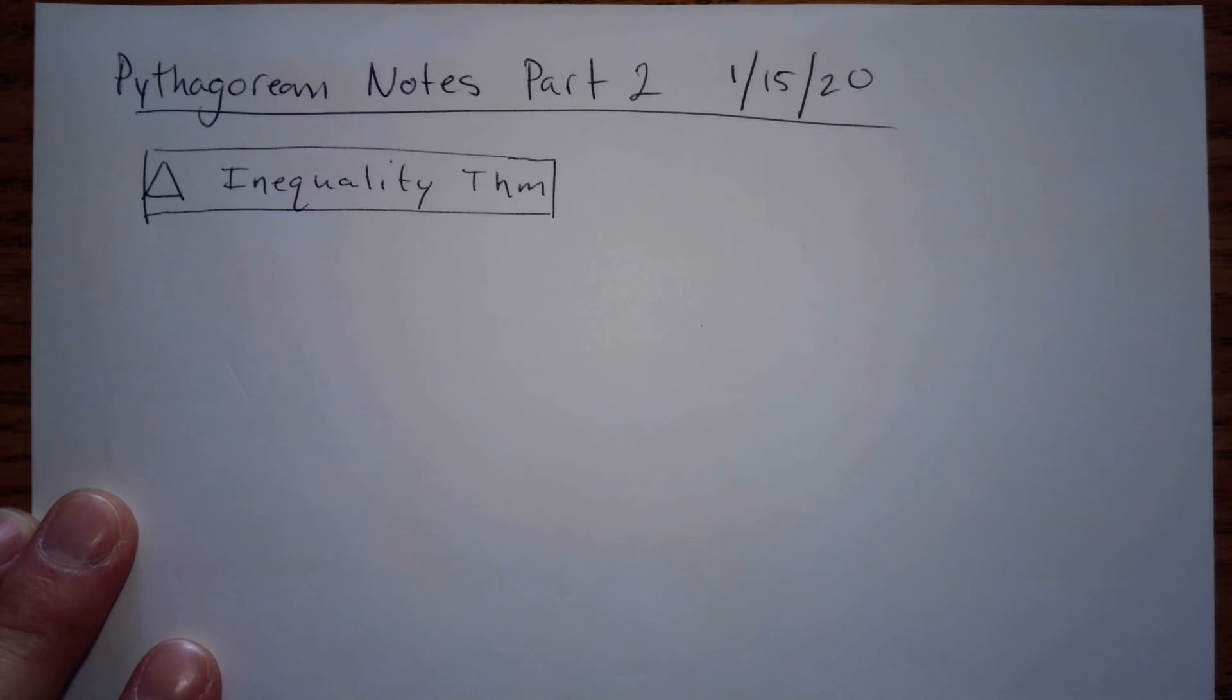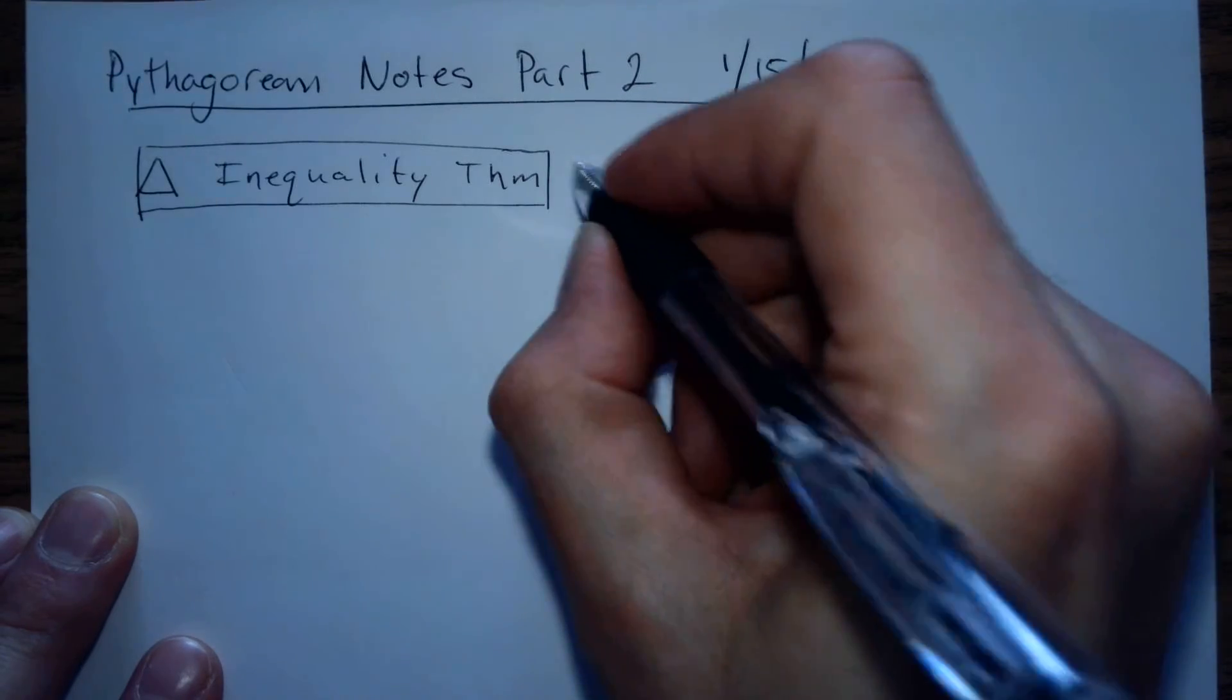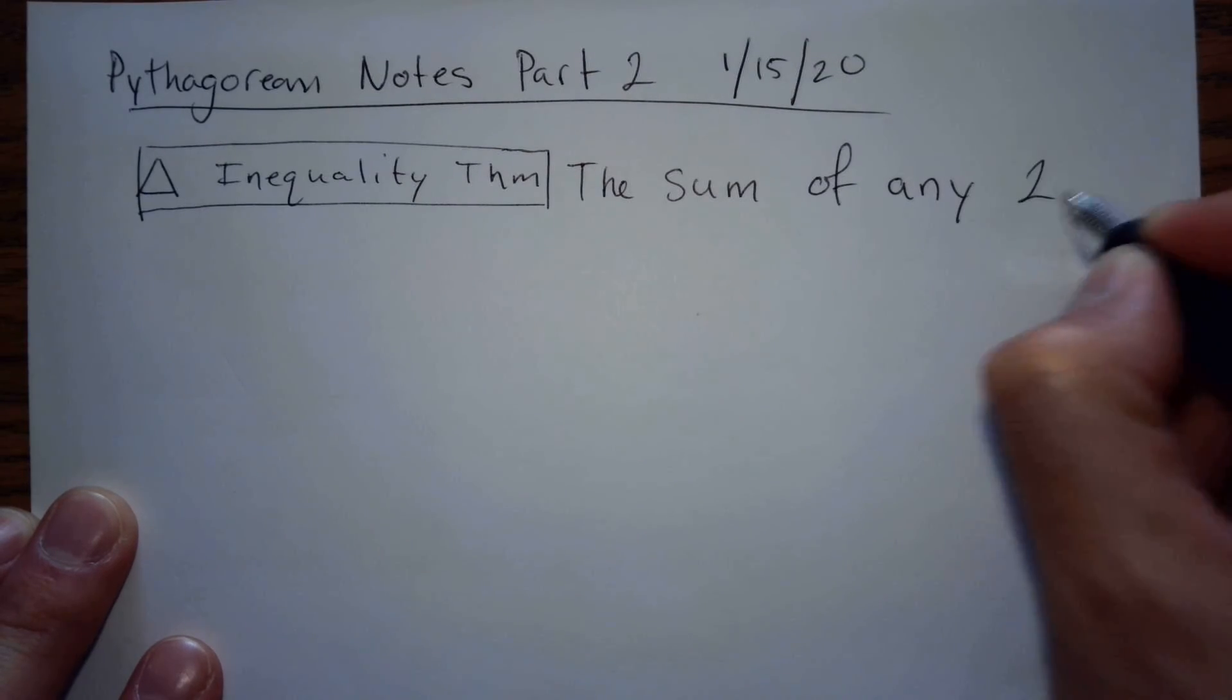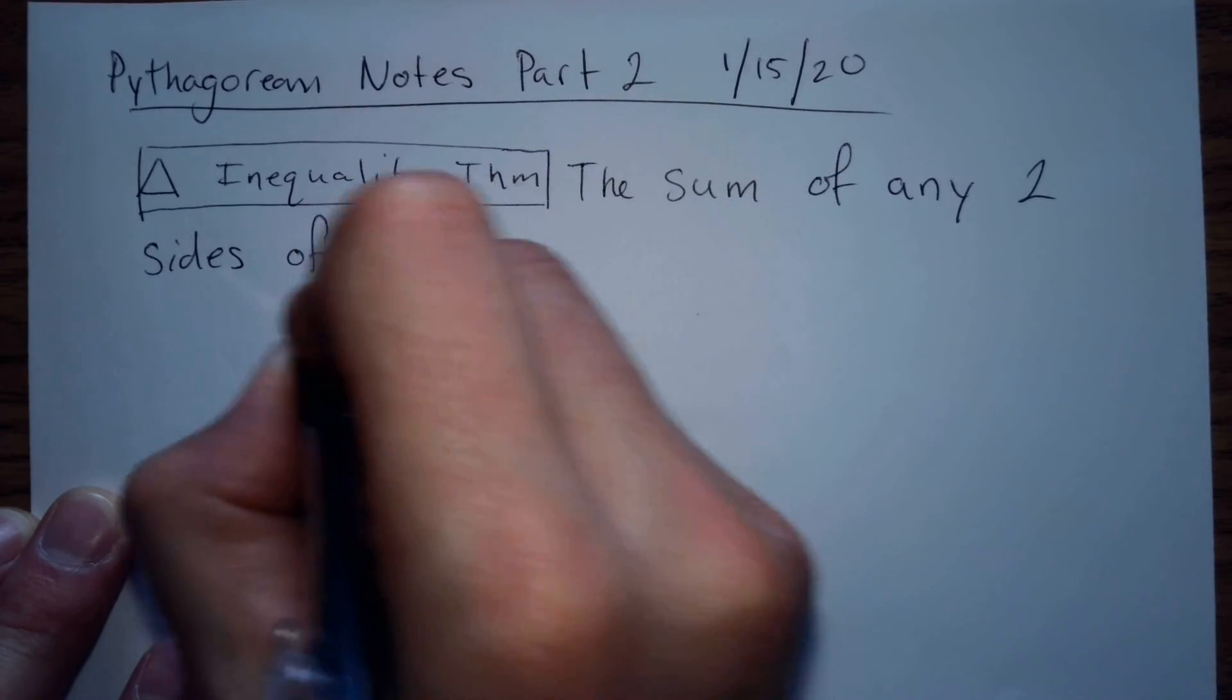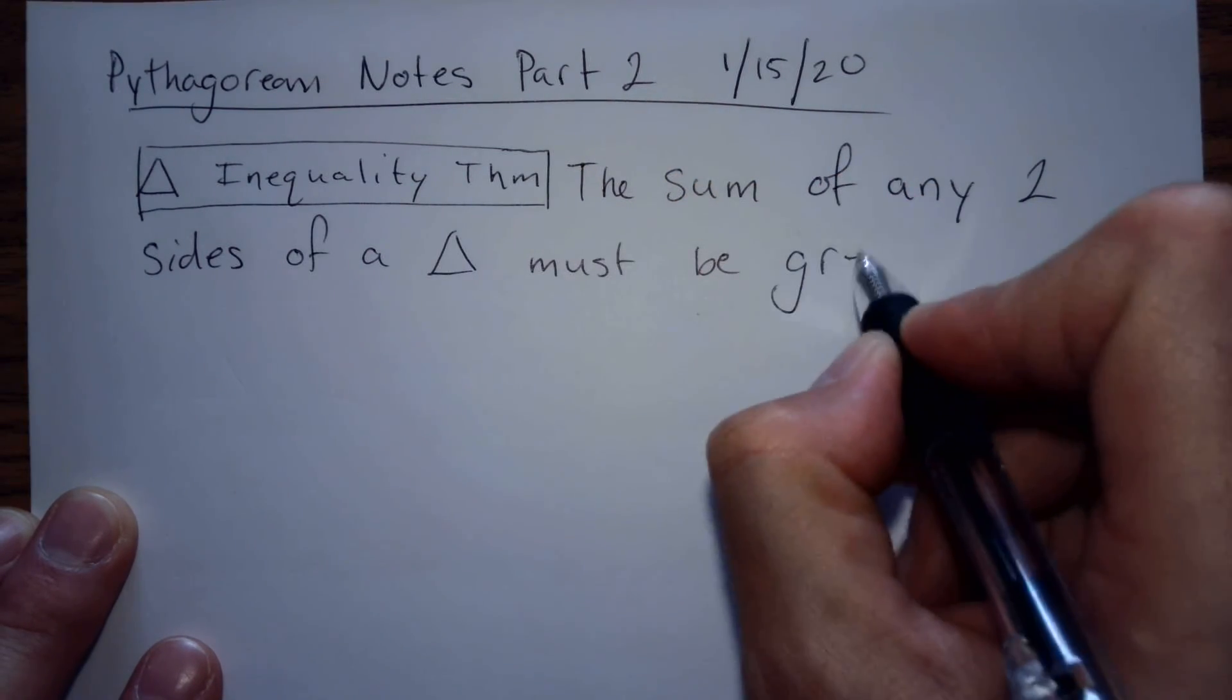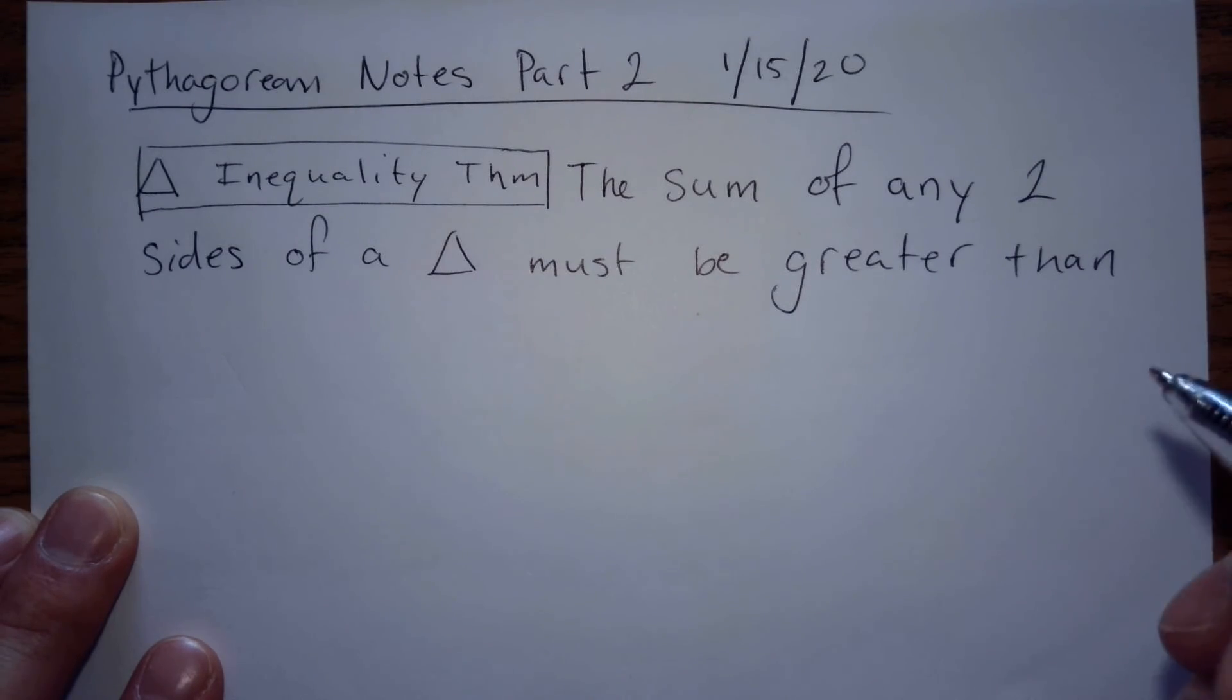it has to be greater than the other side, greater than the last side. So I'll say it, and then I'll show you something on my computer. The sum of any two sides of a triangle must be greater than the third side.